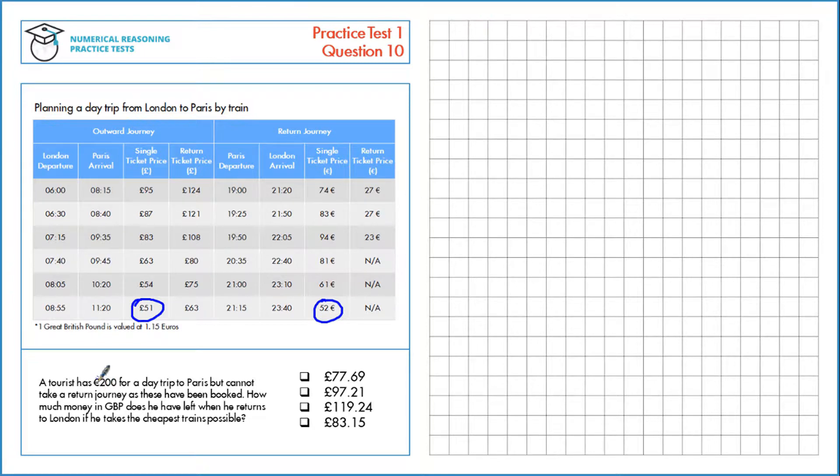First we have 200 euros and we want to be able to take away £51. Obviously we need to convert that into euros, into the pounds first.